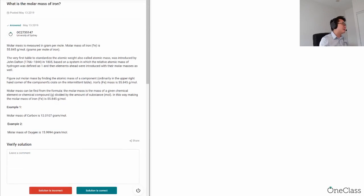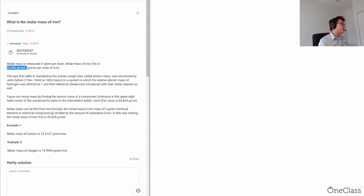The molar mass of iron is measured in gram per mole and is equal to 55.845 gram per mole. Molar mass is the mass per number of mole of element or per number of mole of substance. So from here we are looking for the molar mass of iron.